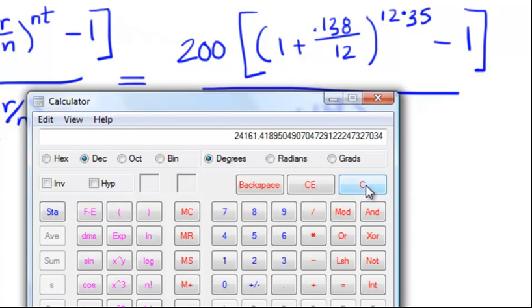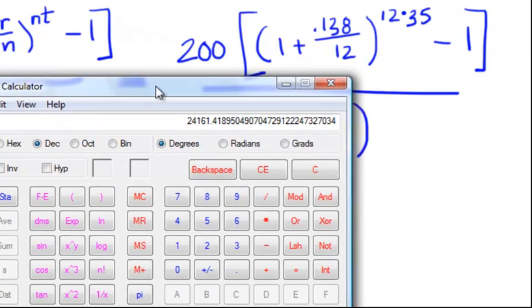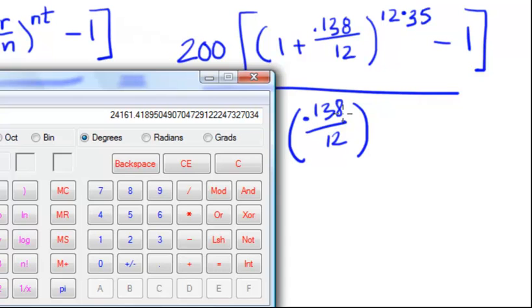We're almost done here. Remember what we're going to do now is take this numerator and divide by r divided by n. In our case, r divided by n is 0.138 divided by 12. Earlier we found that 0.138 divided by 12 was 0.0115.